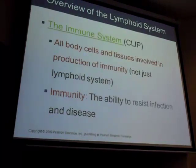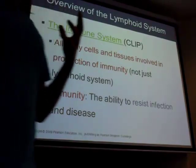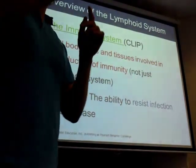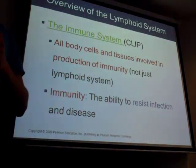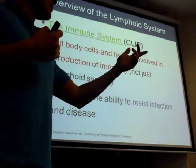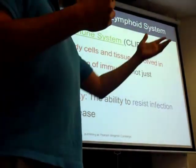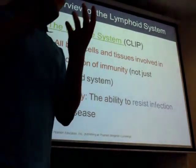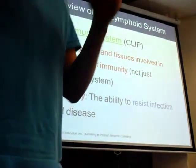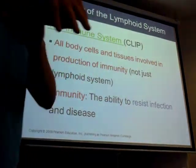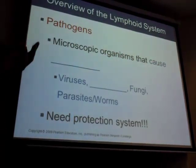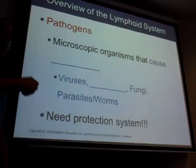Other nonspecific defenses besides skin include mucus membranes and sweat. Mucus catches things and washes them away — inside we have mucus that we cough up, and on the surface there's sweat. These catch pathogens and flush them away. You'll get more detail on that later.